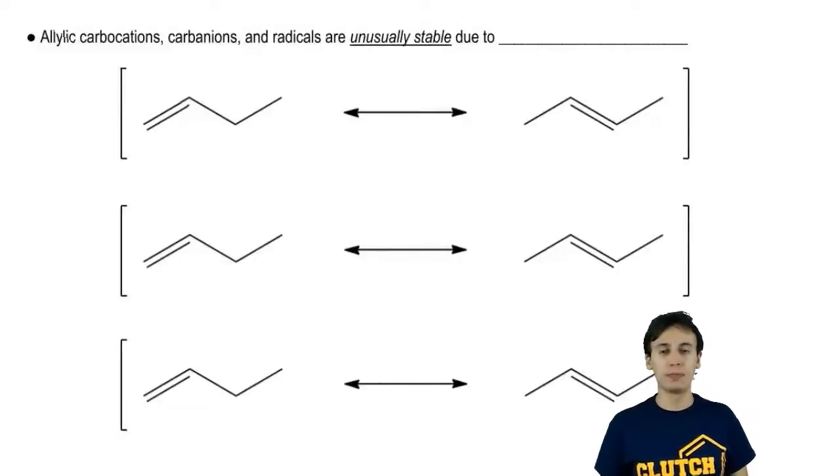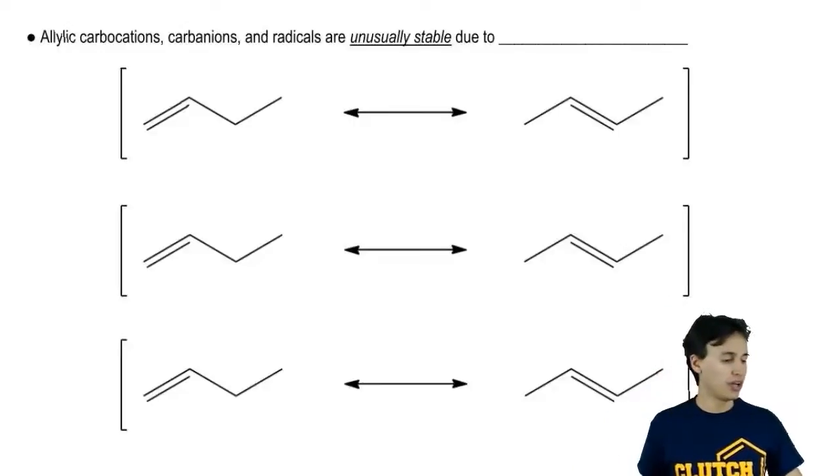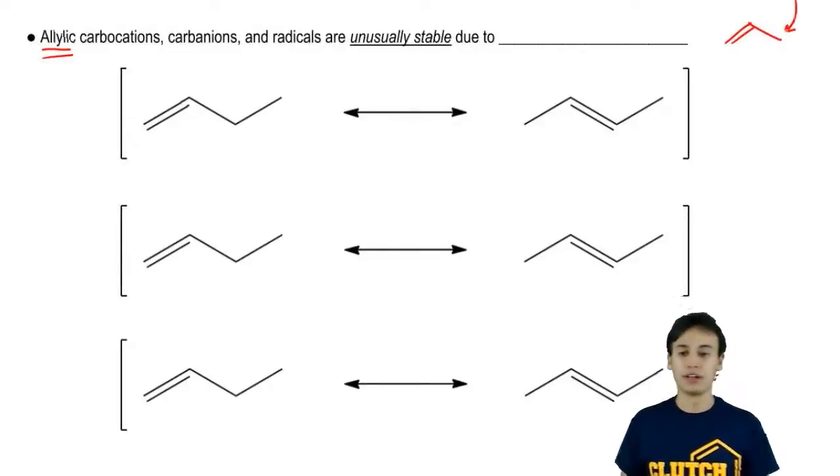In Organic Chemistry 1, we learned about a position word called allylic or allyl. What allylic simply meant was it was the position that's next to a double bond.